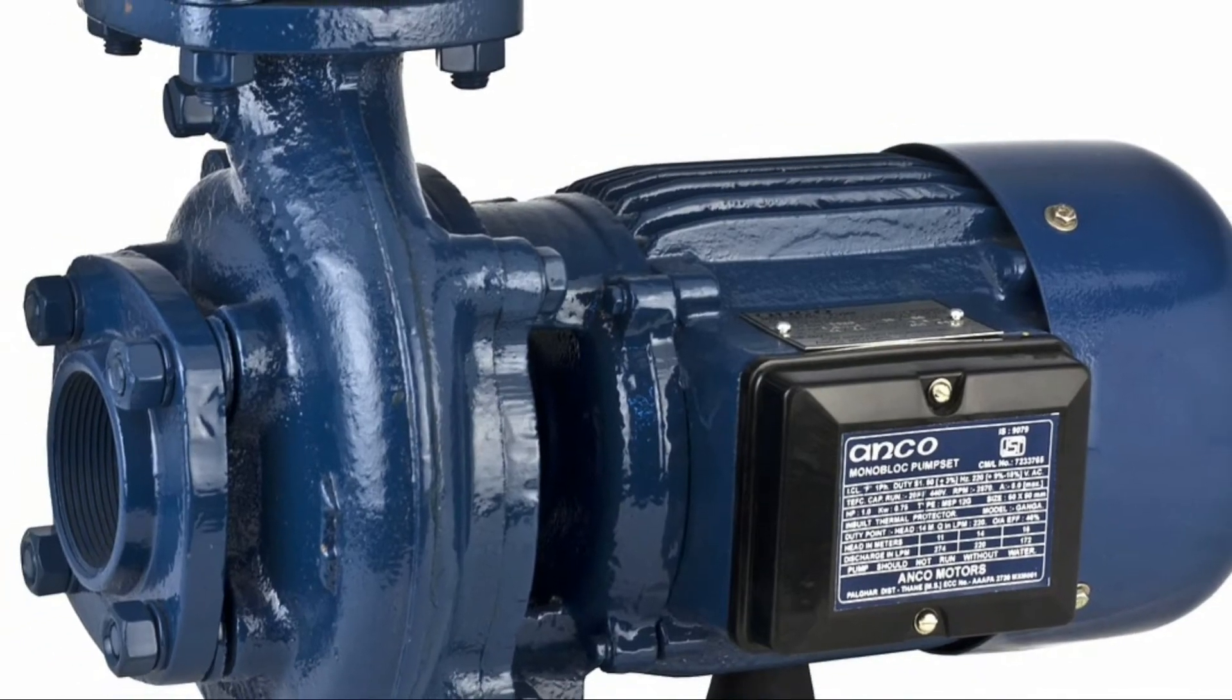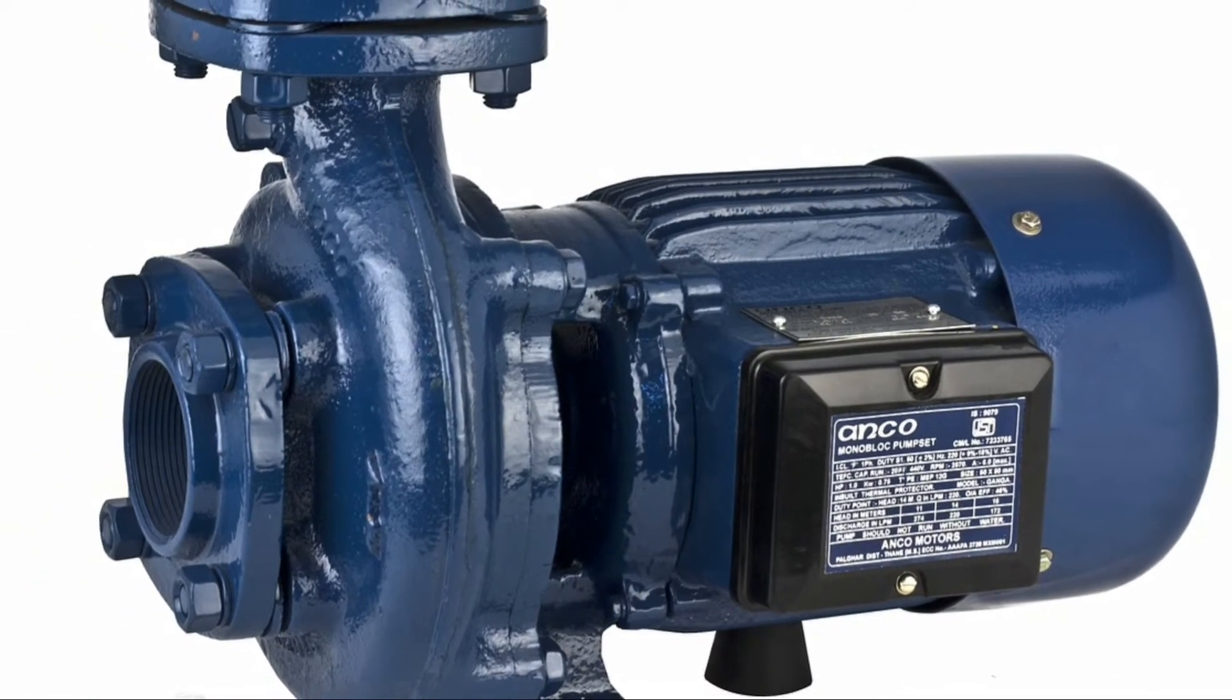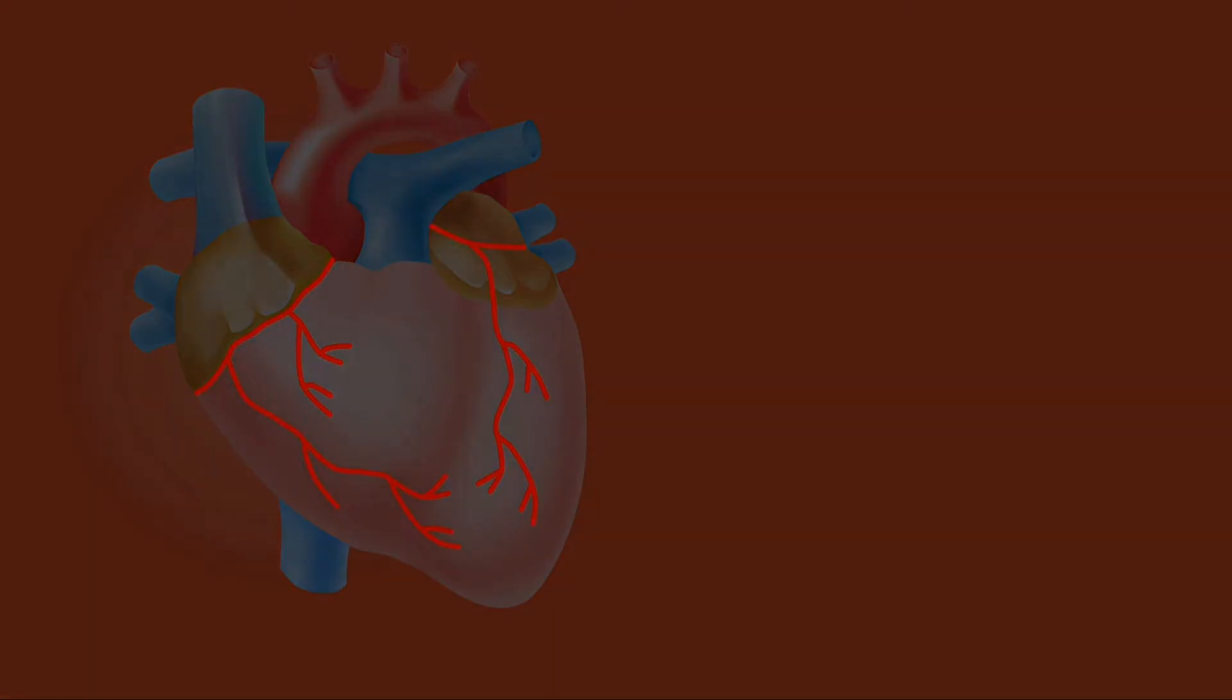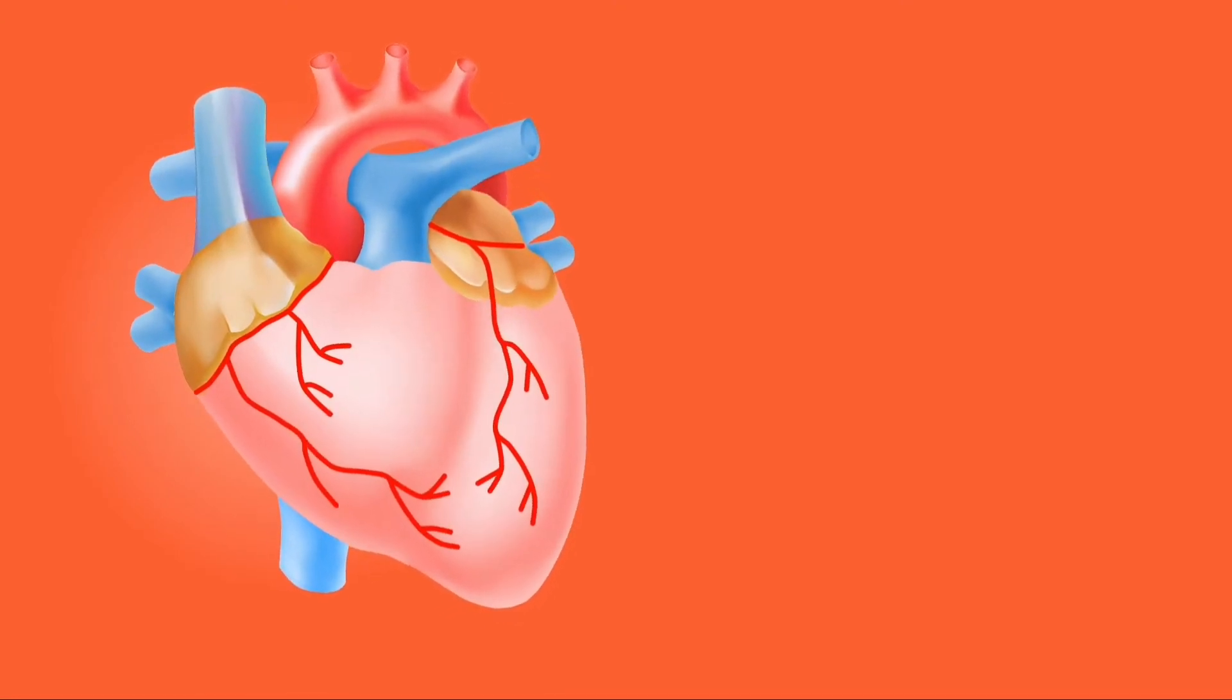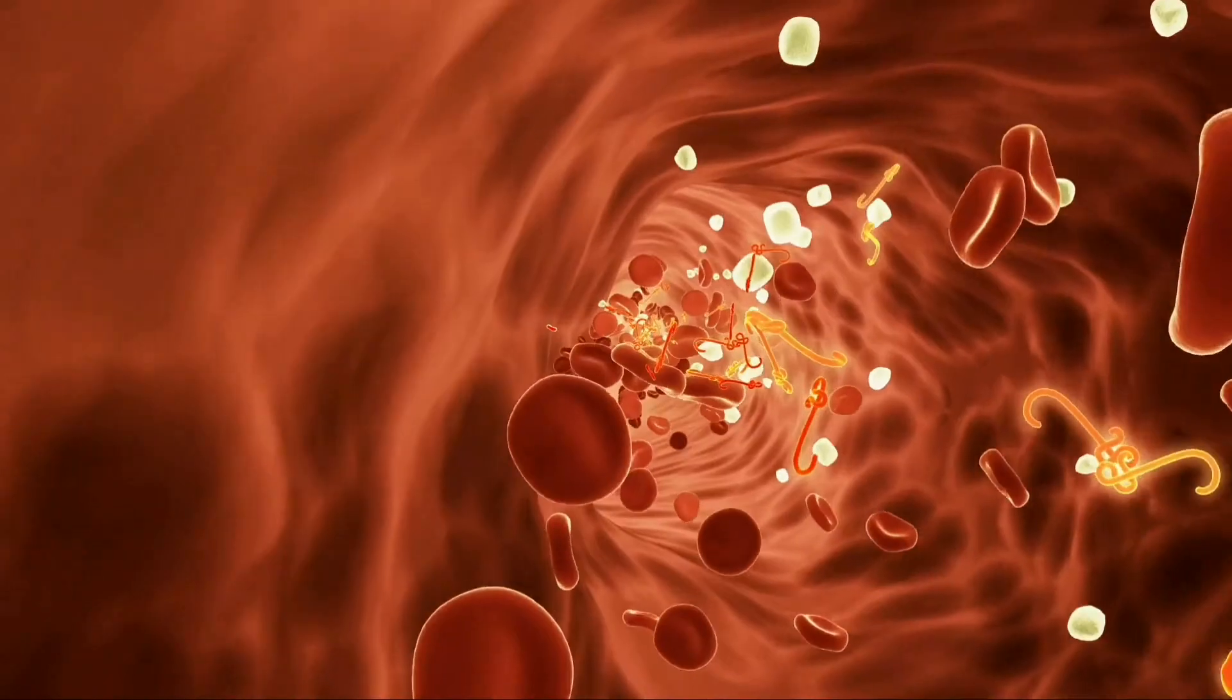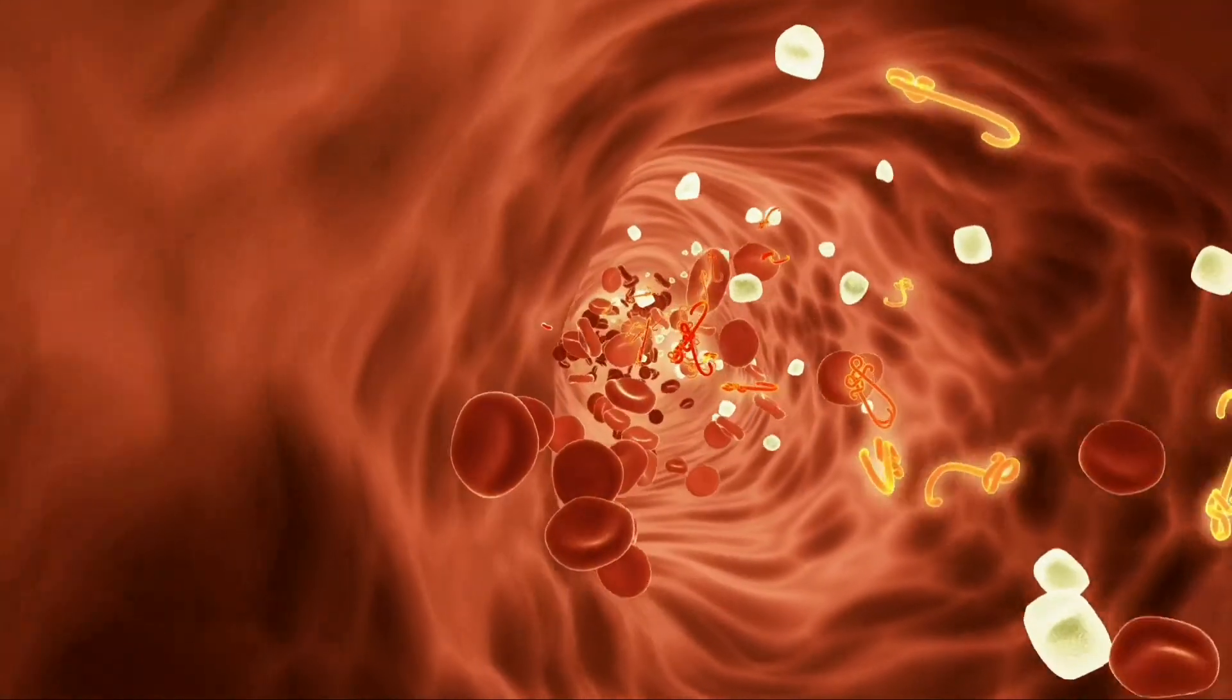You can better understand the situation with an example of a water motor and pipe. A water motor pumps water through pipes, but when the pipes are blocked due to any reason or sudden blockage, the water creates pressure on the motor, which can damage the motor or the pipe.